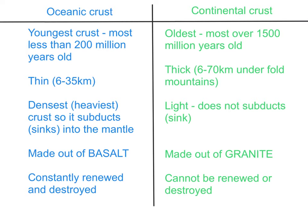The fourth characteristic is the rock type that the crusts are made of. Oceanic crust is made out of basalt, a black rock, whereas continental crust is made out of granite, which has a range of different flecked coloured crystals.